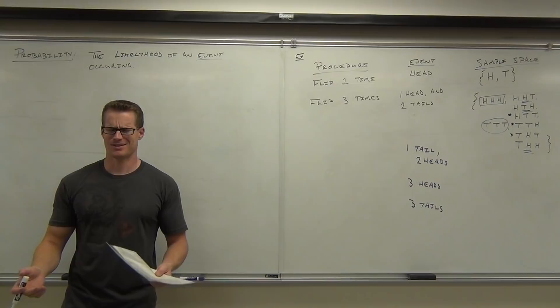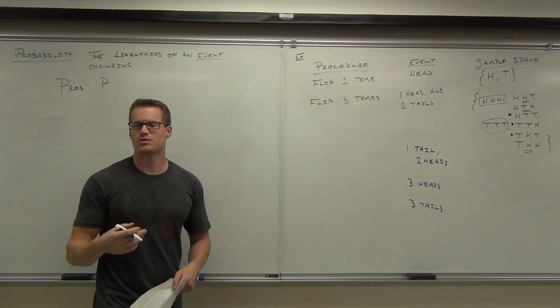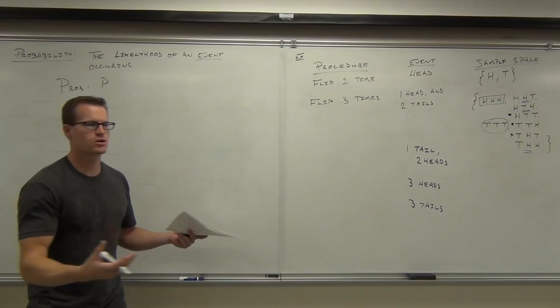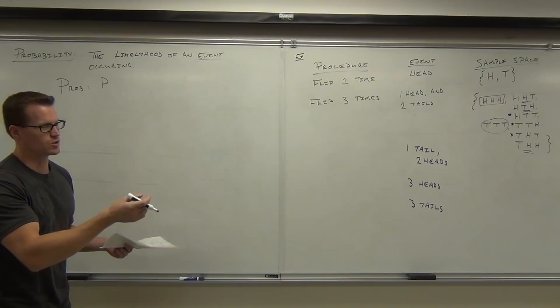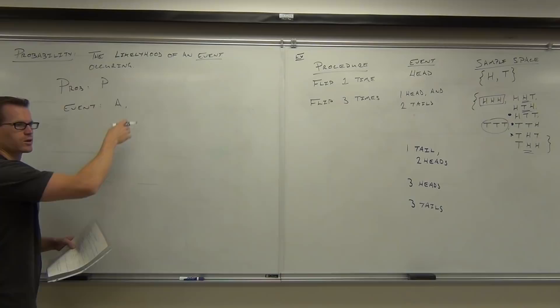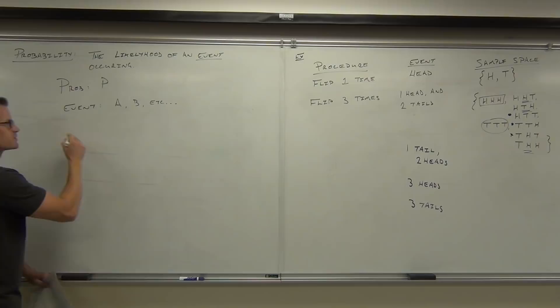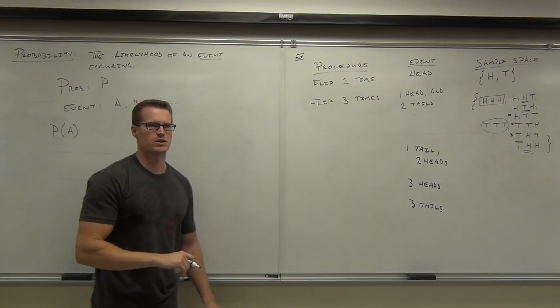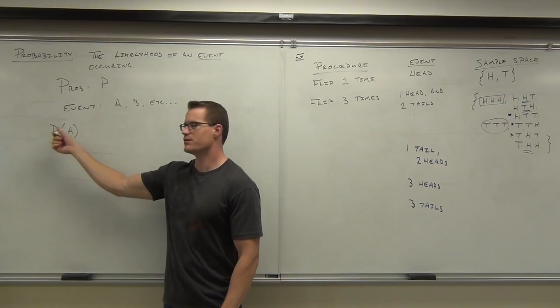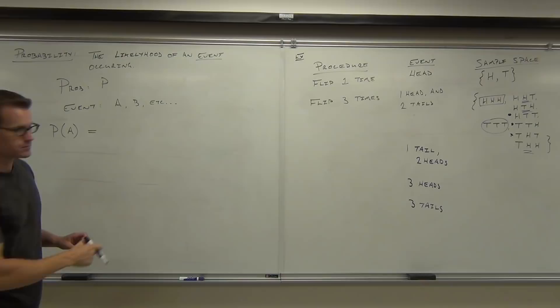What letter do we use for probability? P — probability is P. Events are usually listed with capital letters, so if we're talking about event A, we just say A. A could be flipping a coin three times or any event you're talking about. If we're talking about the probability of an event occurring, we write P(A). That doesn't mean multiplication like in algebra — it's more like function notation. It means the probability of event A actually occurring.